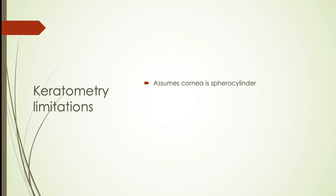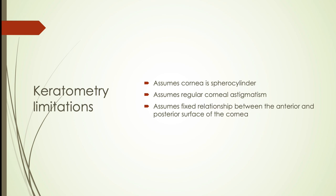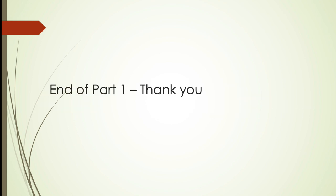The limitations of the keratometer are as follows. First, it assumes the cornea is sphero-cylindrical with regular corneal astigmatism, and hence can give erroneous readings or totally miss irregular astigmatism. Second, it assumes a fixed relationship between the anterior and posterior corneal curvatures, which is why keratometric values are unreliable in patients who have undergone laser refractive procedures.